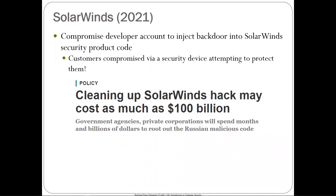The most famous recent example is SolarWinds. Adversaries compromised a developer account for this security vendor — using credential stuffing — and constructed a very sneaky backdoor. Because it wasn't caught in the development process, the vulnerable SolarWinds software was shipped to many customers. SolarWinds is a security product — customers ran it to become more secure, but actually became less secure. This cost $100 billion to remediate.